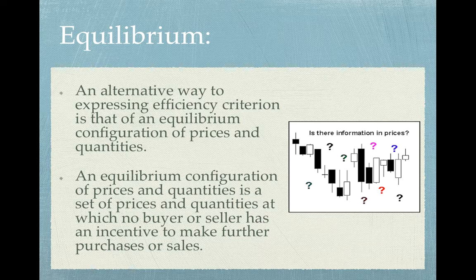Think about forming a line at the checkout counter in a grocery store. You would look for the line with the least number of people and fewest items. But you are not the only smart person doing that — other people are doing the same. After sufficient time has passed and all people have finished looking for the best line, the answer is simple: all the lines will have an equal number of people, and nobody will have an incentive to switch to another line. We call that an equilibrium configuration.